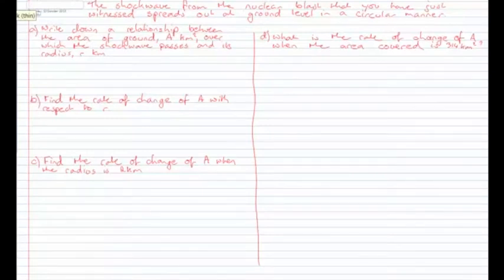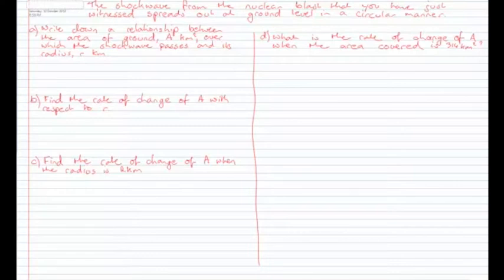Now the shockwave from the nuclear blast spread out over the ground level in a circular manner. Part A asks us to write down a relationship between the area of ground A over which the shockwave passes and its radius R kilometres. Since it spreads in a circular fashion, the area of a circle is A = πR², where R is the radius, the distance from the centre to the outside.